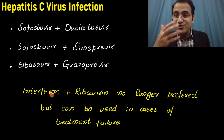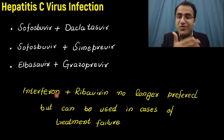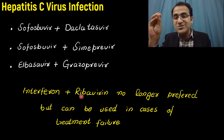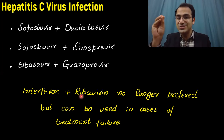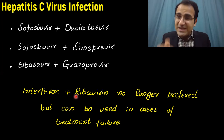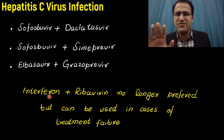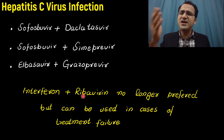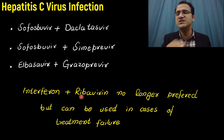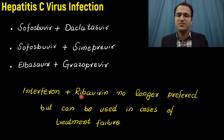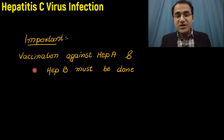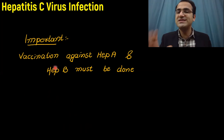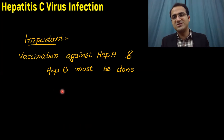Previously, interferon plus ribavirin was used for hepatitis C treatment, but interferons are no longer preferred. They are only used when the direct-acting antivirals are unavailable. An important point: patients receiving HCV treatment should be vaccinated against hepatitis A and hepatitis B virus.